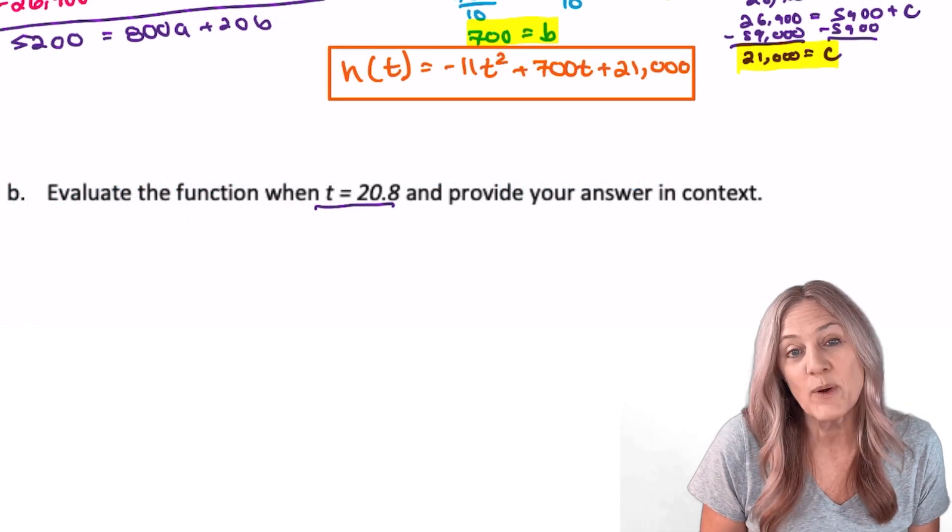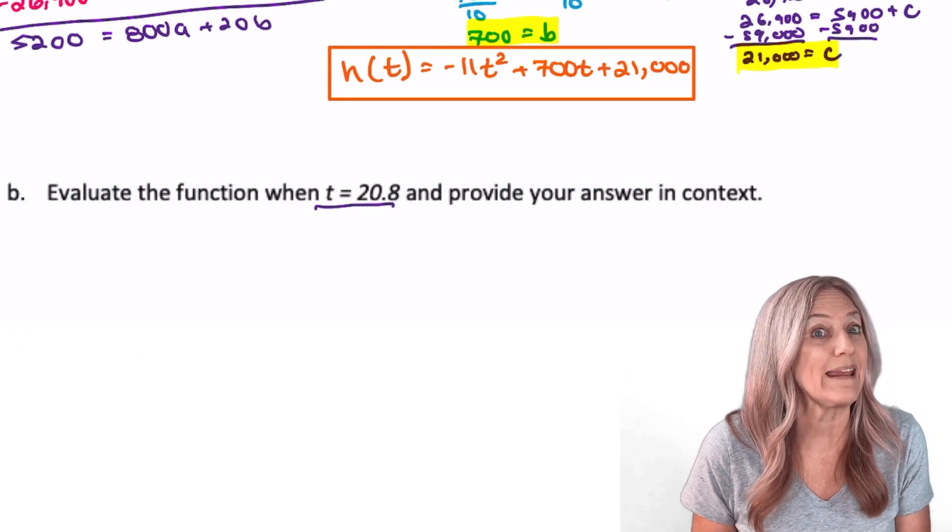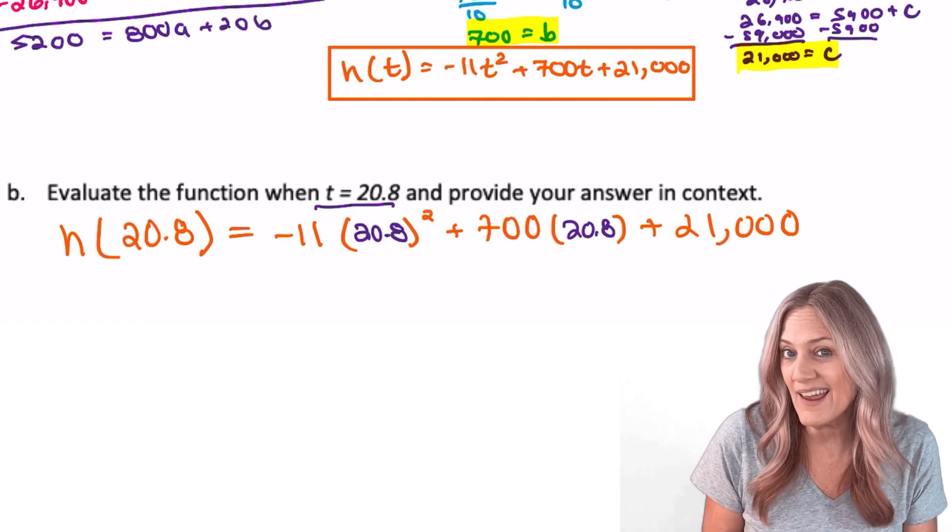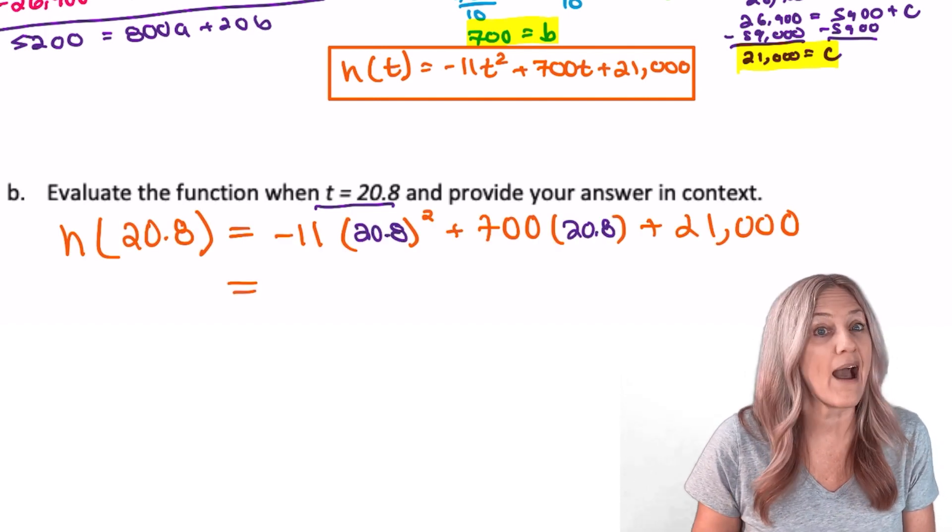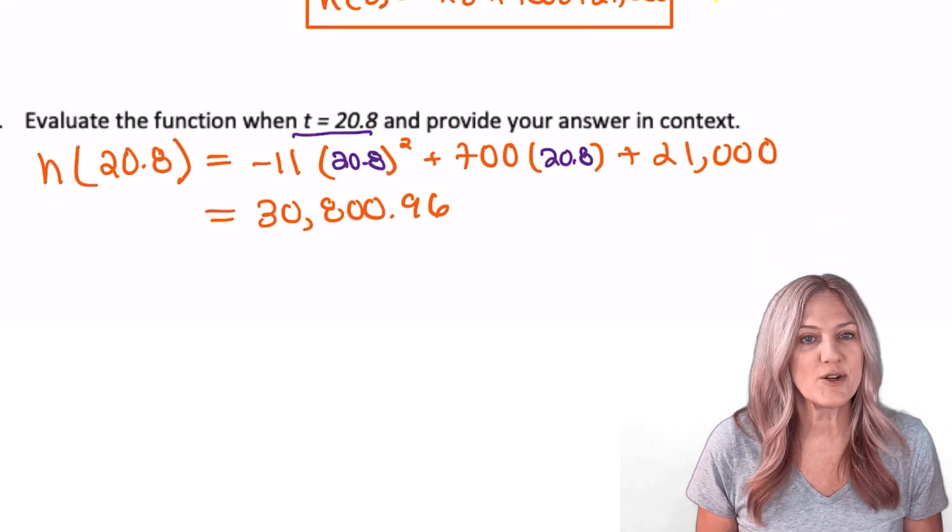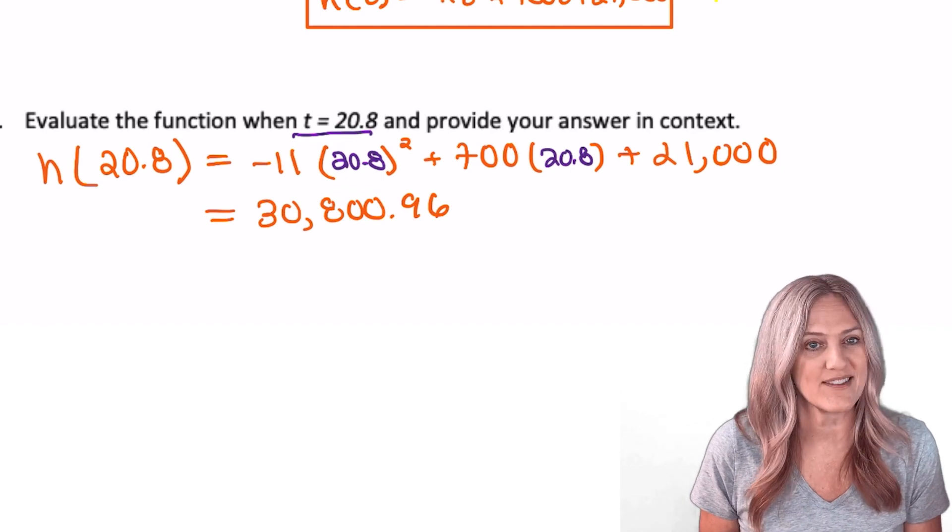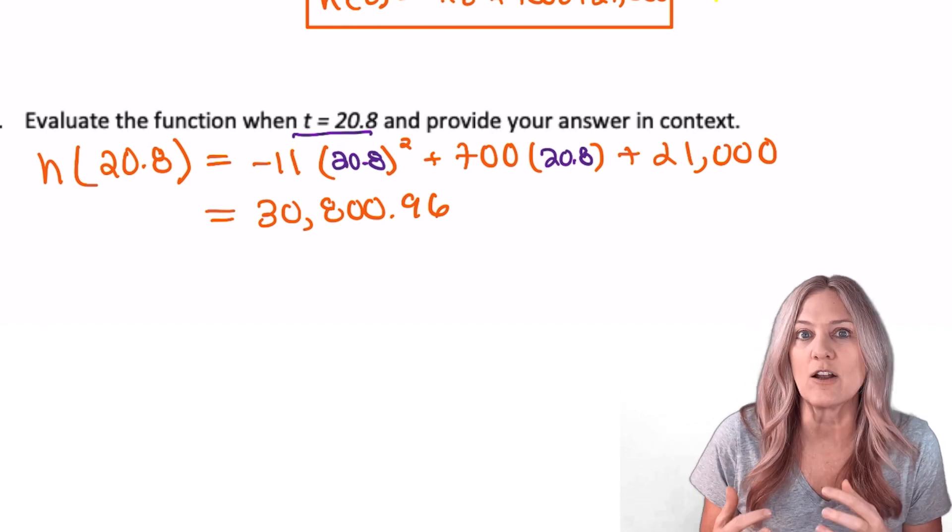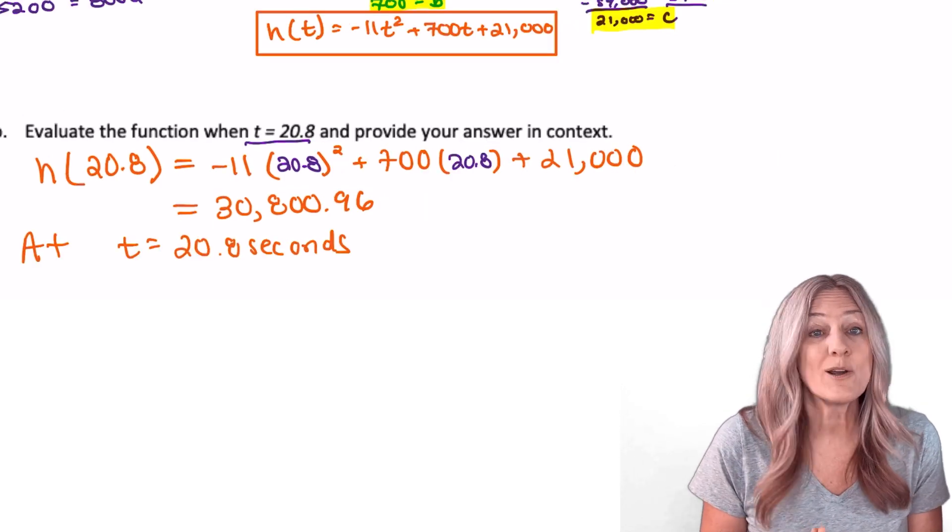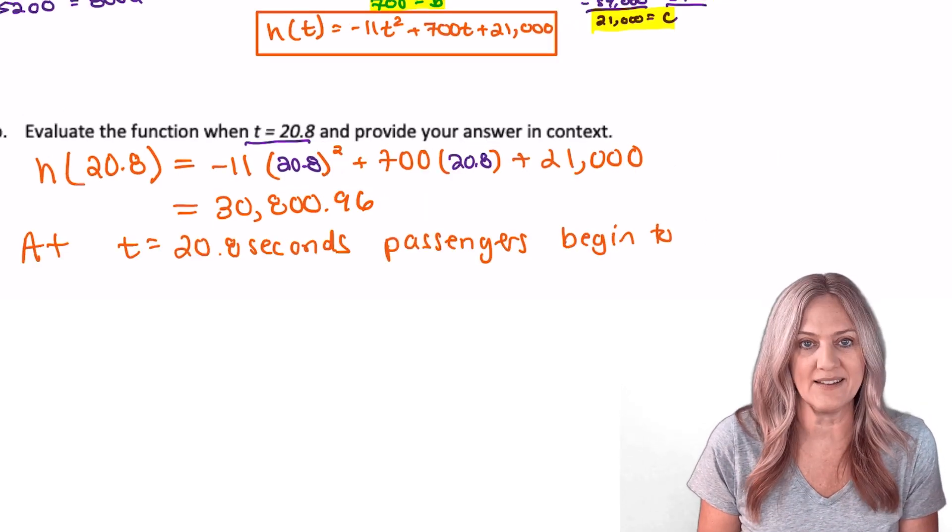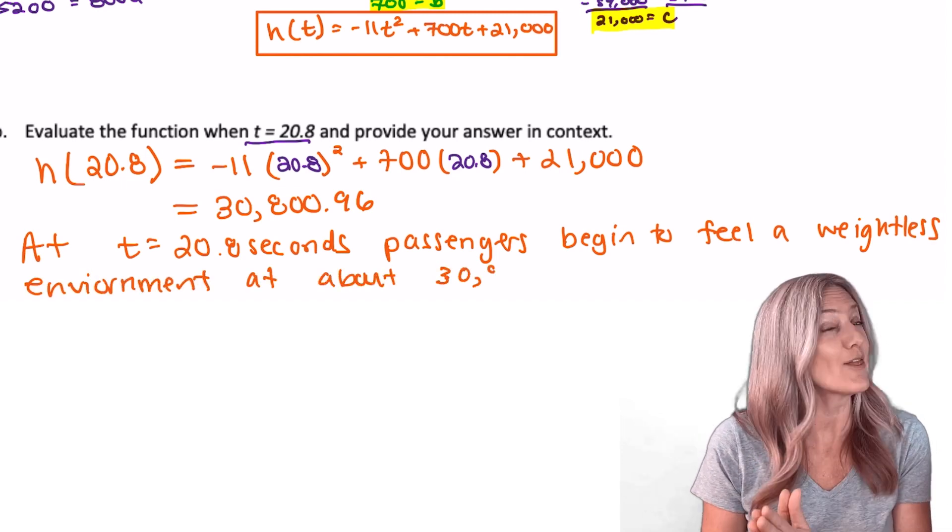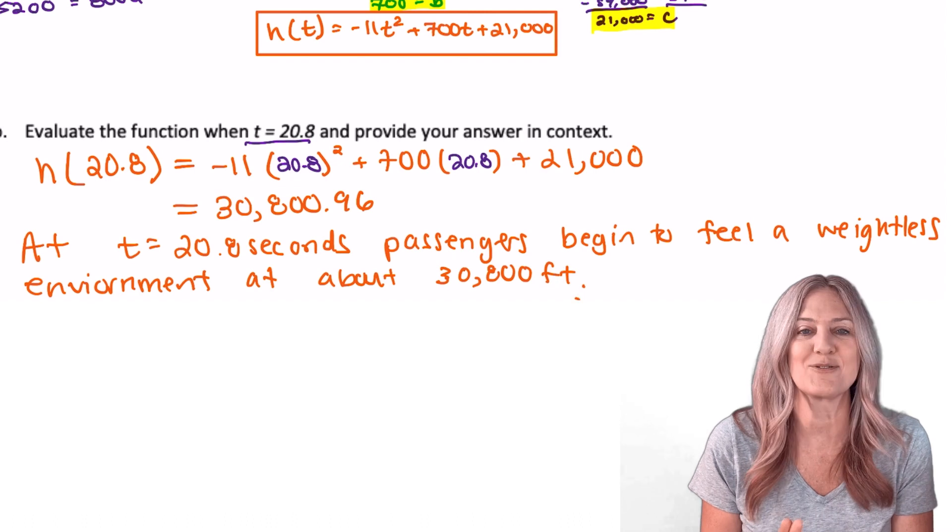After 20.8 seconds passengers begin to feel a weightless environment. Let's plug in t = 20.8 and evaluate to find out how high this occurs. h(20.8) = 30,896.96. Now what does this mean in context of the situation? Well at t = 20.8 seconds passengers begin to feel a weightless environment at about 30,800 feet.